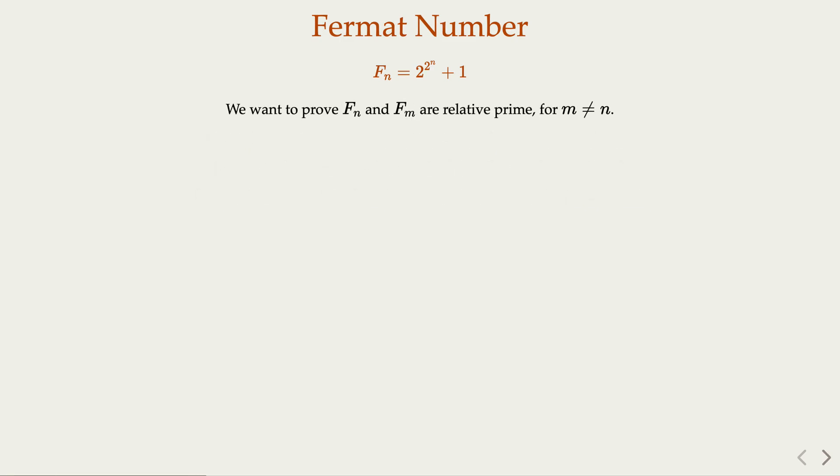So the idea is that we need to show for different n, the two Fermat numbers are relatively prime. So what's the meaning of that? That is, they do not share any prime factors. In other words, each has different prime factors.